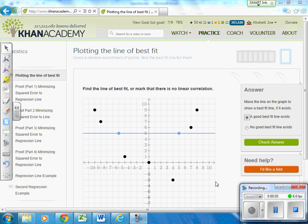Plotting the line of best fit. There will either be a good best fit line, in which case I will move my line so that it fits it there, or there will be no good best fit line exist. In this problem, the lines are all, all of my points are scattered about, so I do not have, so it's no good best fit line.